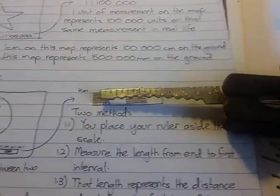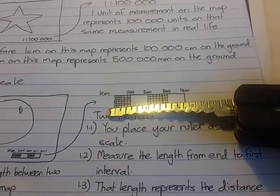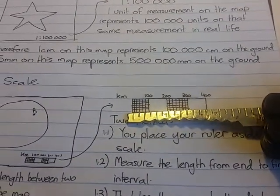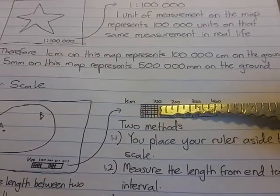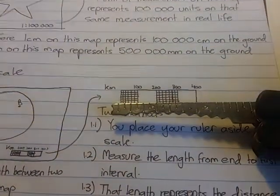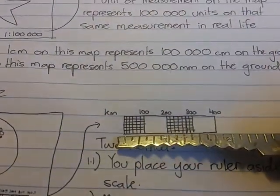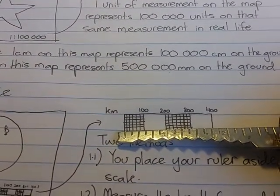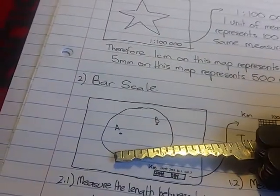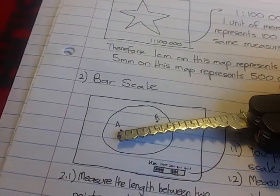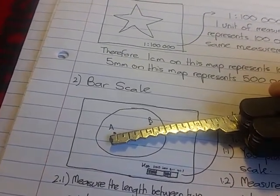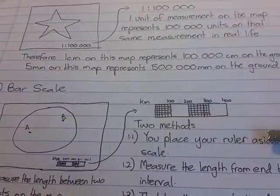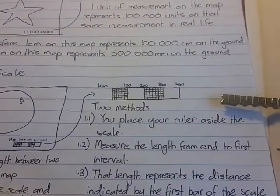Place the ruler aside the scale and measure the length from the edge to the first interval — in other words, from here to the 100 kilometers. This comes to about three notches on my ruler. So every time I see three notches measured on my map, that's going to represent 100 kilometers. And that's essentially the first method.